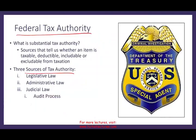The first thing we want to know is the definition of substantial tax authority. A substantial tax authority is the source that tells us whether an item is taxable, deductible, includable, or excludable from income. There are three sources of tax authority: legislative law, administrative law, and judicial law.